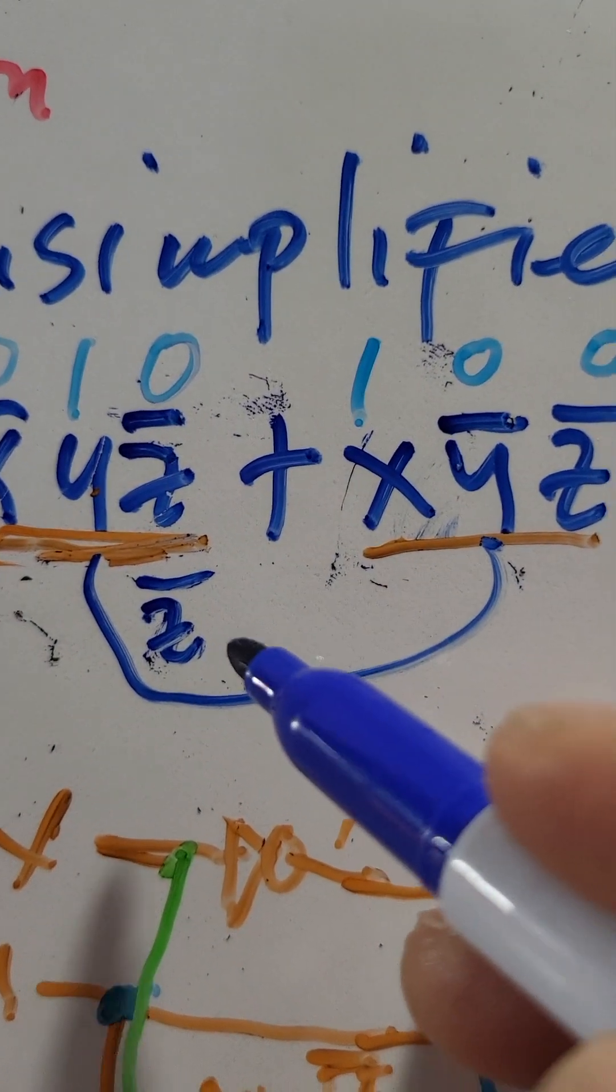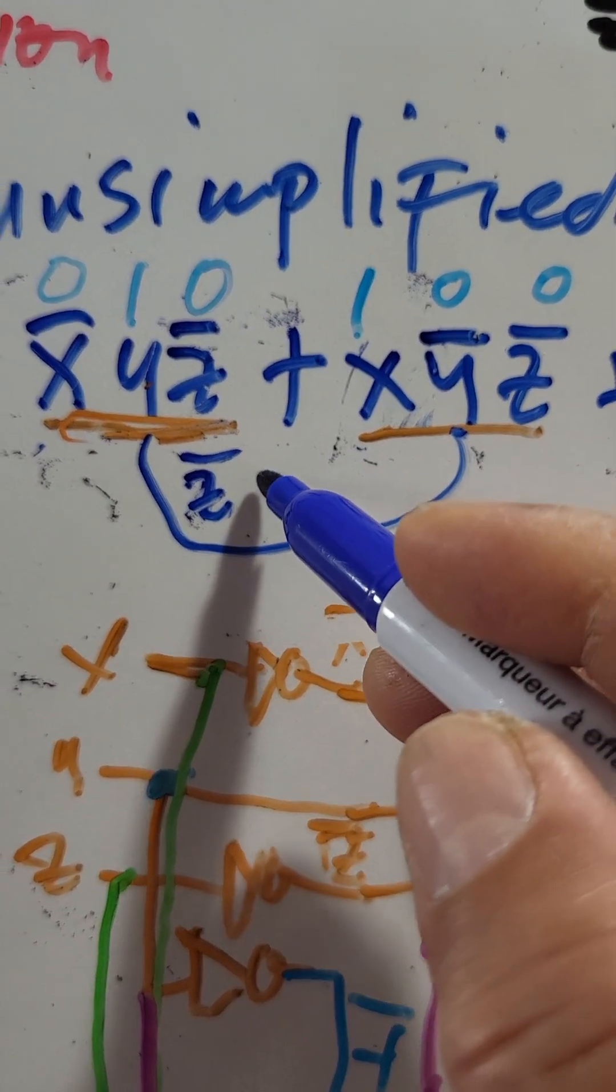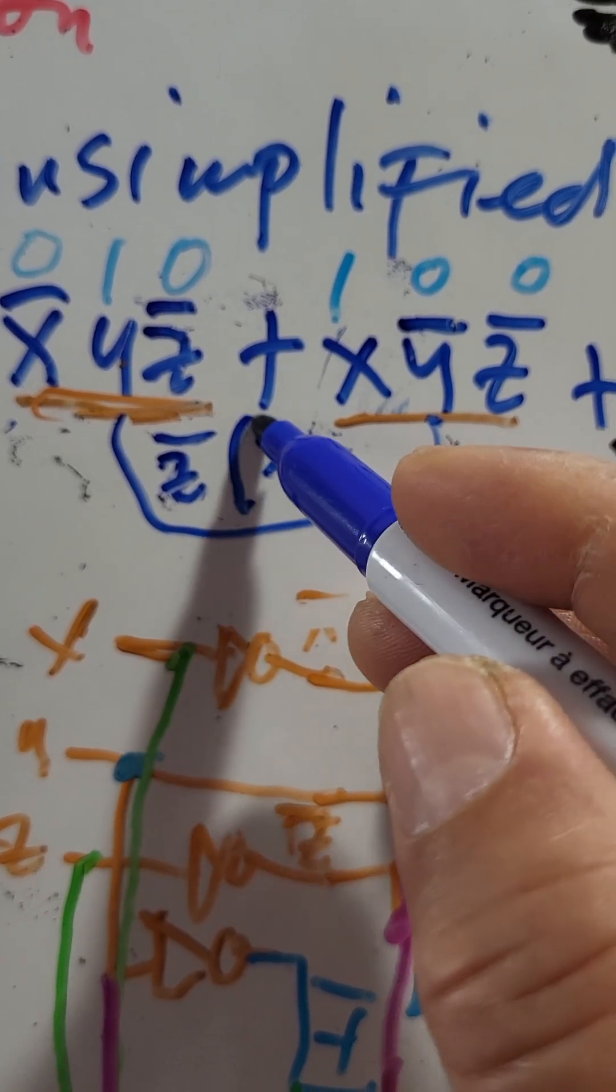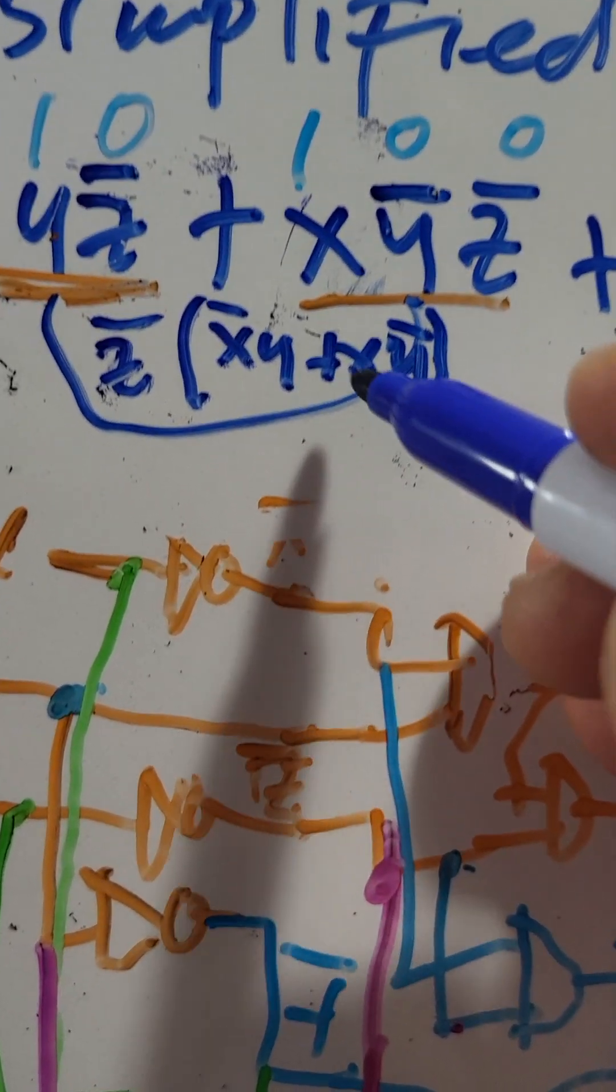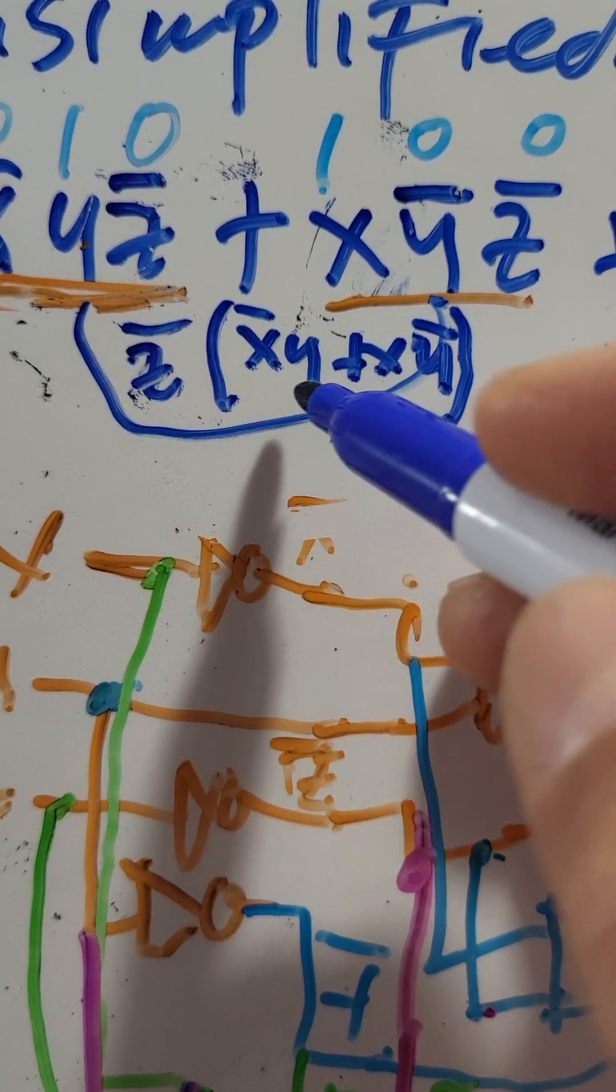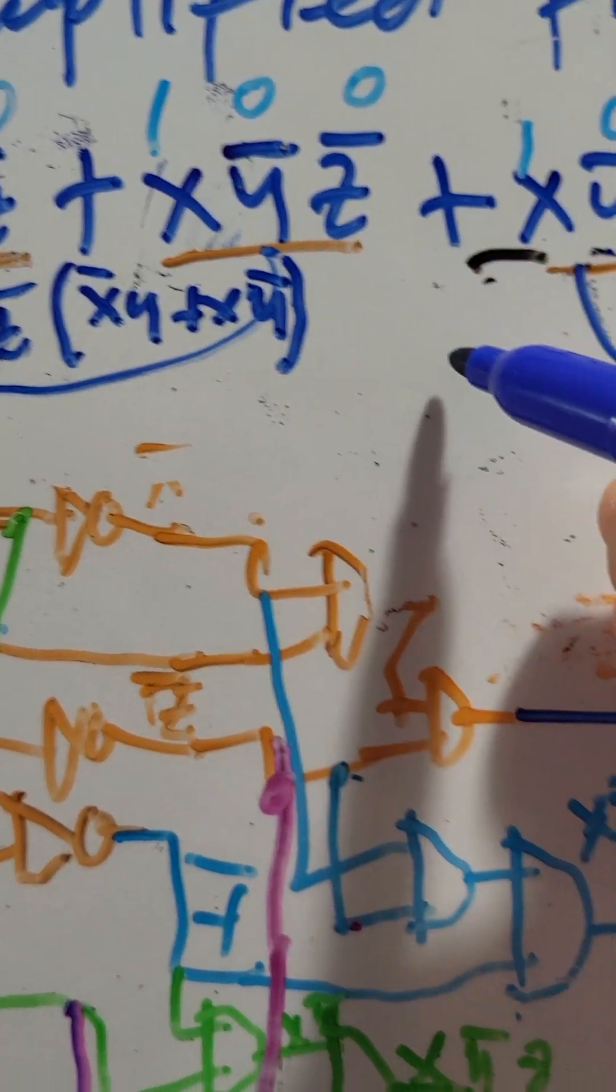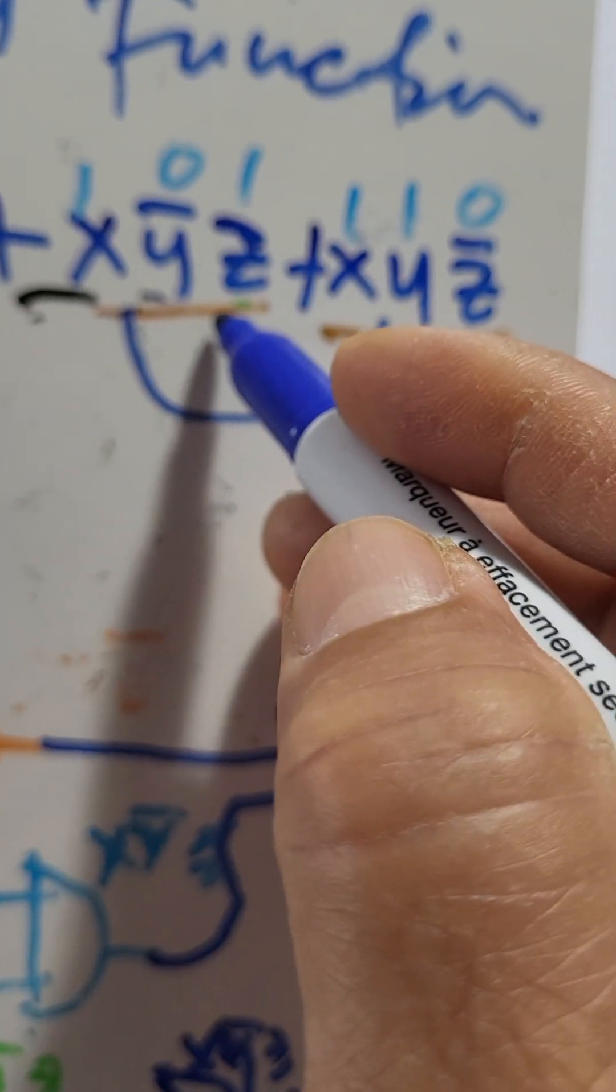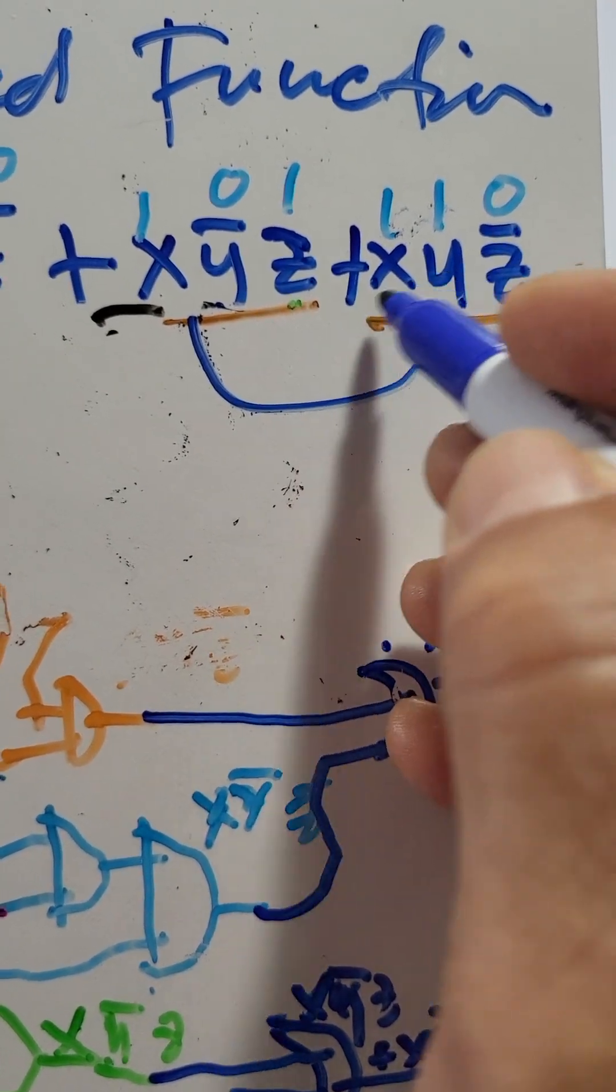So, what is the common term here, or common variable? Z bar. Then, what is remaining is X bar Y plus X Y bar. But this one, we cannot cancel this one. We cannot cancel this. It's not allowed. So, and also here, what is the common here? Common is X and remaining is Y bar Z bar Y Z bar. So, we cannot cancel also that one.